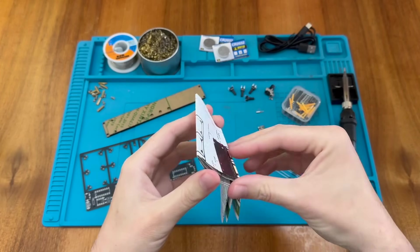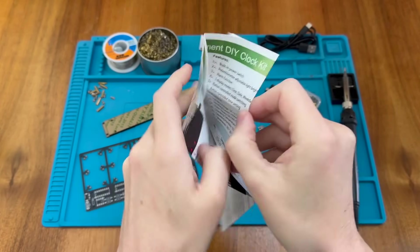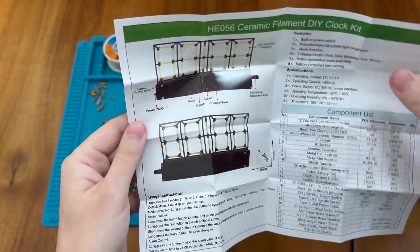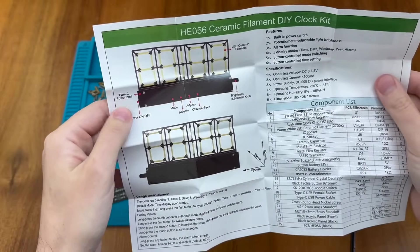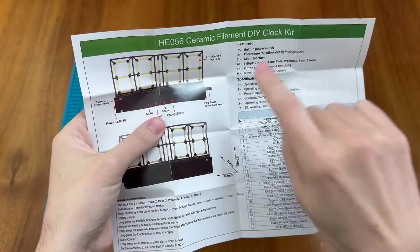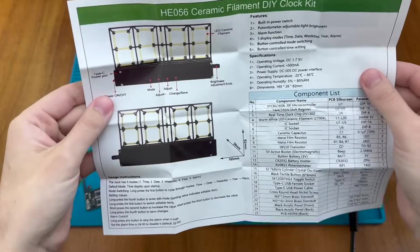Unlike some of the kits I've done recently this one does indeed come with comprehensive instructions. So we can see a little bit about how the clock is going to look when fully assembled. We can see there's the power port on the left hand side as well as the on off switch which we've just seen, the buttons to control the clock, the ceramic LED filaments, and a brightness adjustment knob which is going to be quite nice.